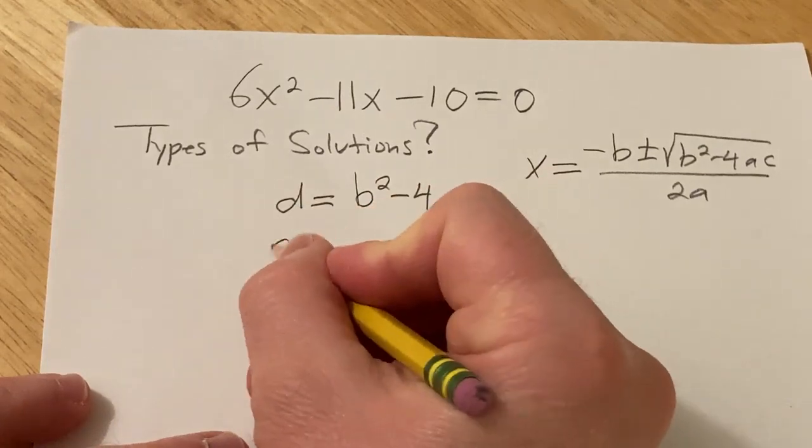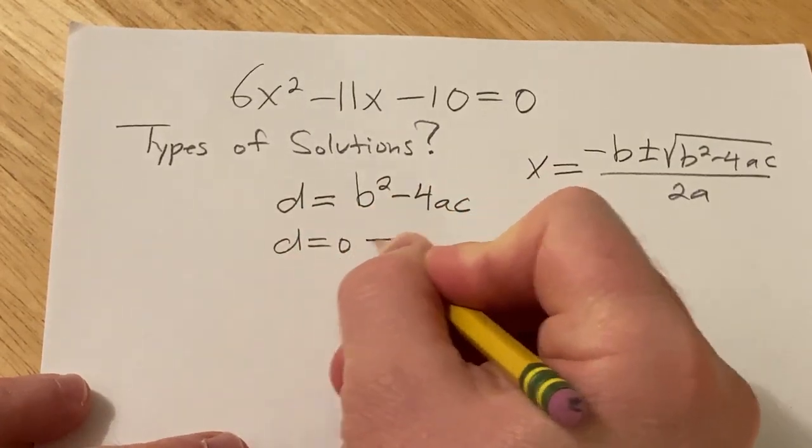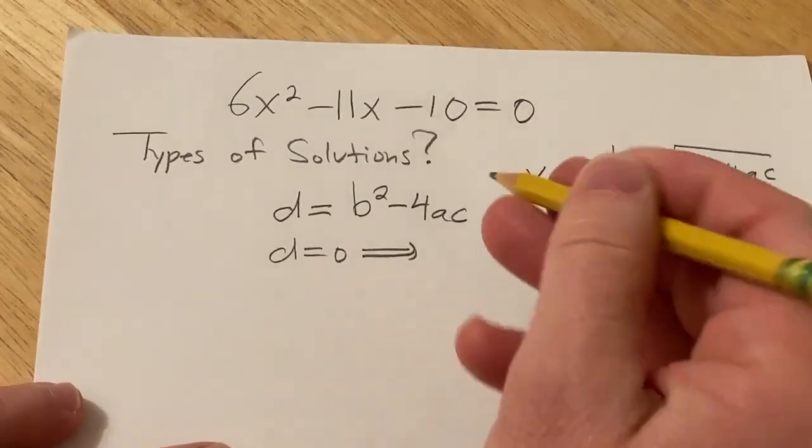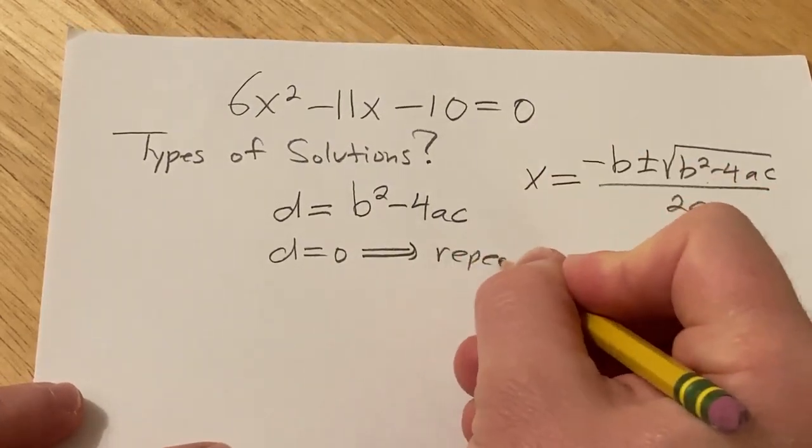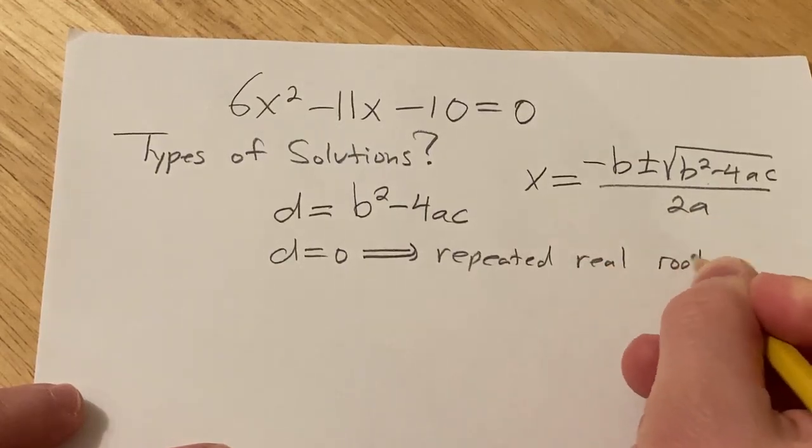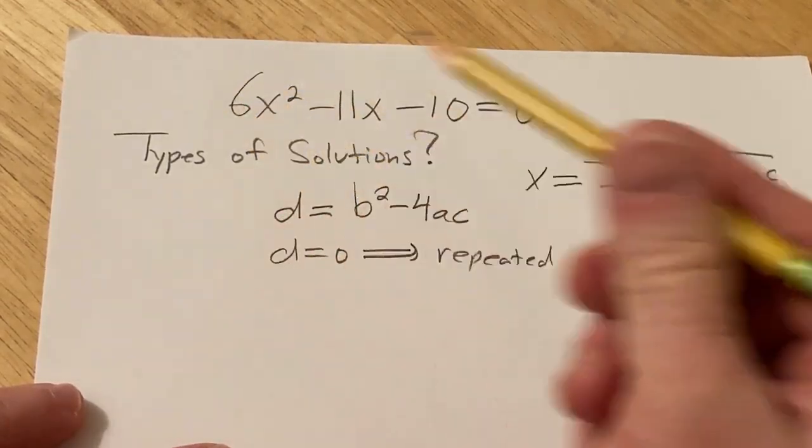So basically we have a couple different cases. If this is 0 then basically the square root of 0 is 0 so we just get negative b over 2a. So we have a repeated real root because we're dealing with equations with real coefficients.